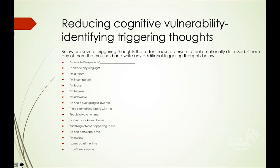There is a list on the screen of examples of possible triggering thoughts. Look at the list and check off any that might fit for you. If not, try and think of some thoughts that tend to be triggering for you. If you have a hard time thinking of what might be a triggering thought, think back to the last time you felt upset, sad, or anxious and try to remember some of the thoughts you had in that situation that made you feel a little bit worse.